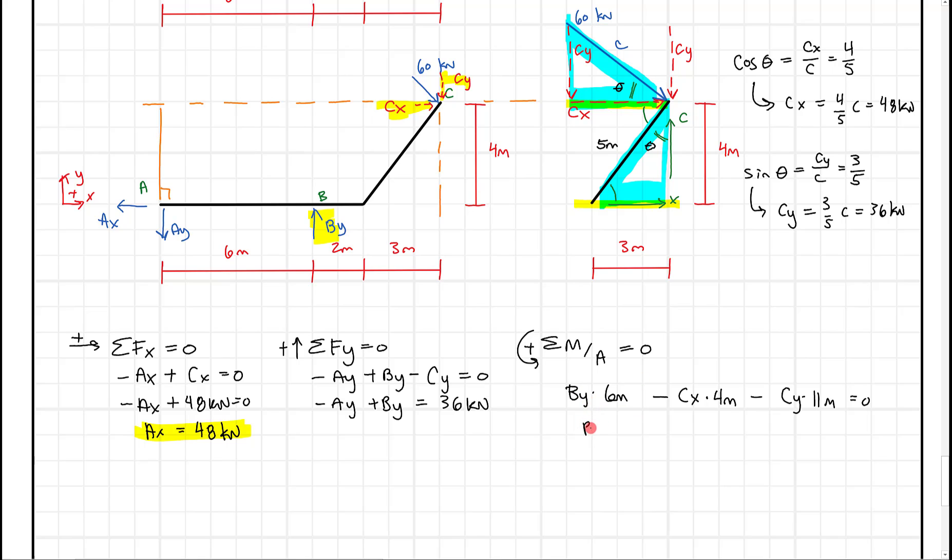Now I can substitute my Cx and my Cy in here and we can solve for By. When I do that, I get By times six meters. I'm going to put these two negatives to the other side. So I'll get Cx, which is 48 kilonewtons times four meters plus 36 kilonewtons times 11 meters. And when we work this out, we're going to get By equals 98 kilonewtons.